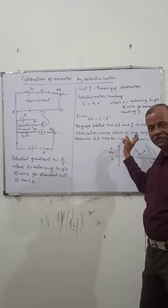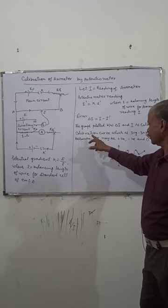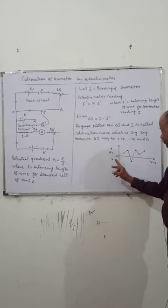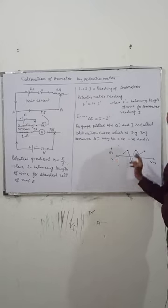The graph plotted between ΔI and I is called the calibration curve, which is a zigzag curve because ΔI may be positive, negative, or zero. This is the calibration curve.